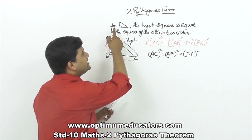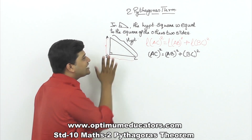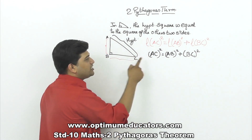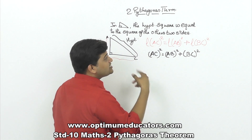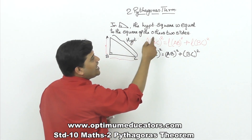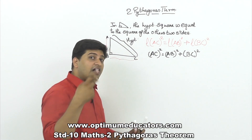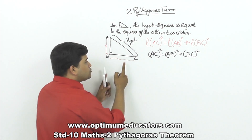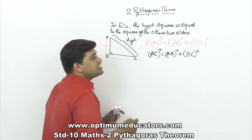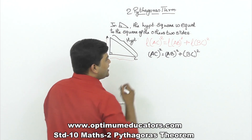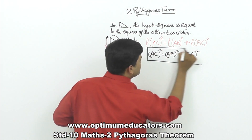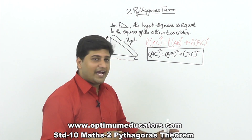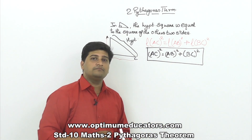This is what Pythagoras theorem says. In general, we also write it as: AC² = AB² + BC². Let us verify this is correct according to the statement. In right angle triangle ABC, the hypotenuse AC squared equals the sum of the squares of the other two sides, AB² plus BC².